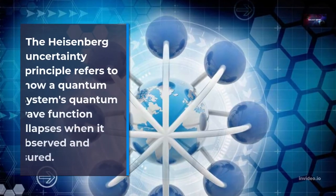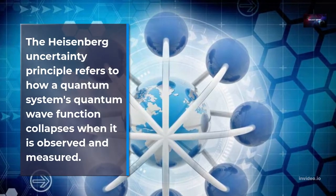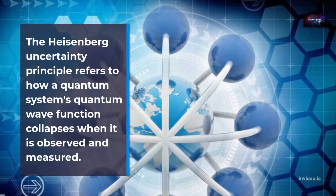The Heisenberg uncertainty principle refers to how a quantum system's quantum wave function collapses when it is observed and measured.